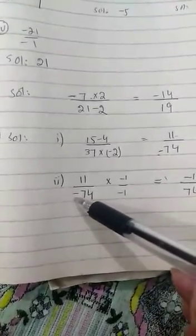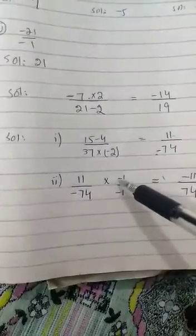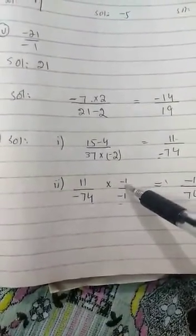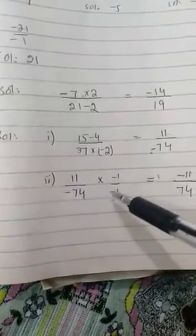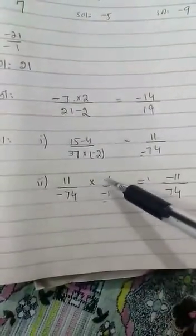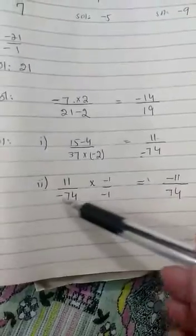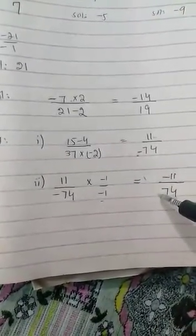Now for this 74 to become positive, minus to plus, we will just multiply minus 1 by minus 1. Minus 1 multiply on top and minus 1 multiply on bottom. So what will happen? 11 times 1 is 11, plus into minus is minus. 74 times 1 is 74, minus into minus is plus. Now you can see that denominator is positive.